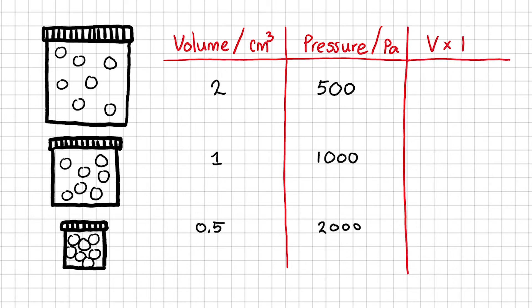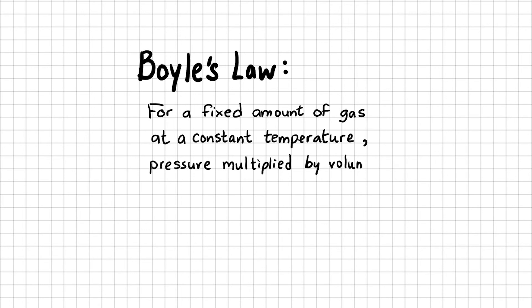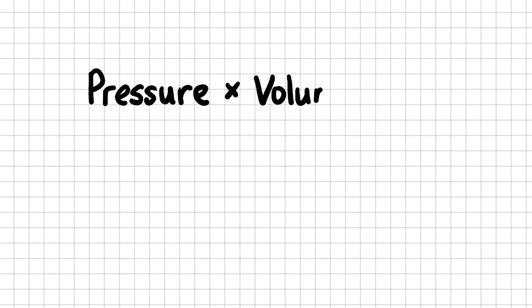I'm going to add an extra column here, and say that this column is for multiplying volume by the corresponding pressure. So if I take each row and multiply them together, I get 1000 for all of them. This is not a coincidence. Boyle's law tells us that for a fixed amount of gas and a constant temperature, the pressure multiplied by volume is always constant. So pressure times volume is equal to a constant.